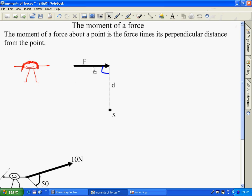For example, if we have Amelia here pushing with a force of 10 newtons and the perpendicular distance was 5 metres, we would simply do 10 newtons times 5 metres to get 50 newton metres. So the units of force are newton metres.